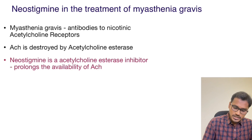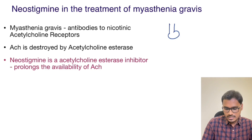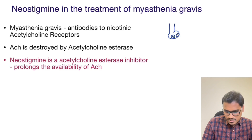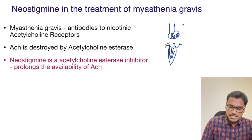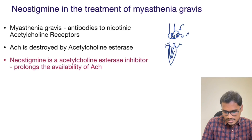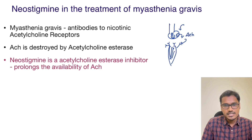Let us understand what happens normally in the neuromuscular junction first. In the presynaptic terminal, that is the neuron, acetylcholine will be present in the vesicles. And in the muscle, there will be several acetylcholine receptors. Whenever any impulse or stimulus comes, the acetylcholine is released from the vesicles, binds to the acetylcholine receptors, and causes muscle contraction.